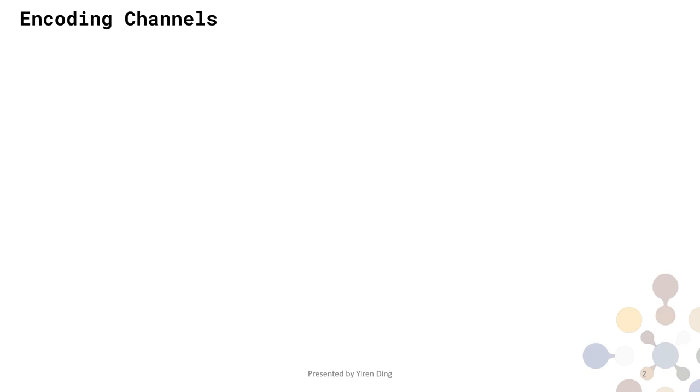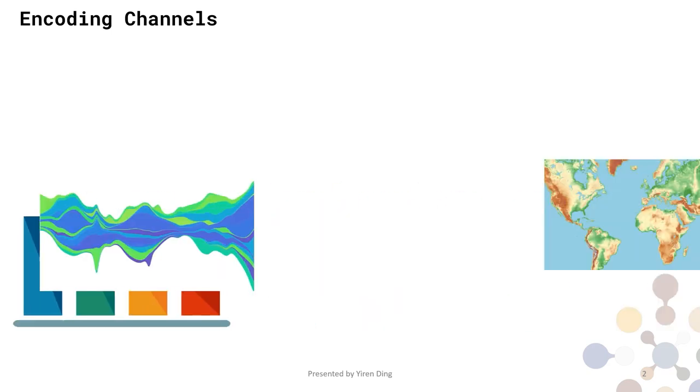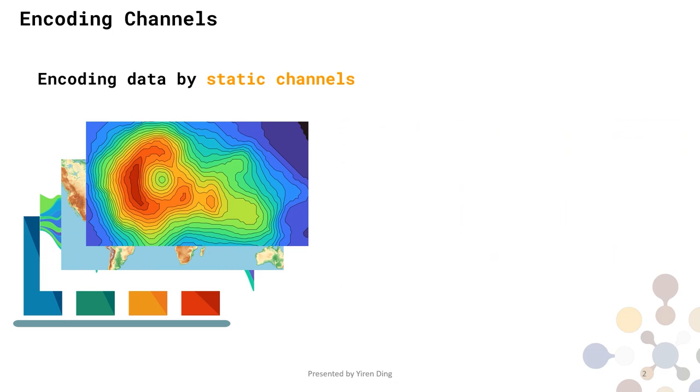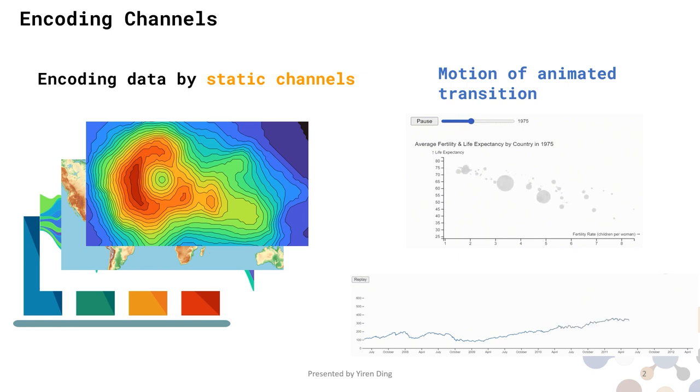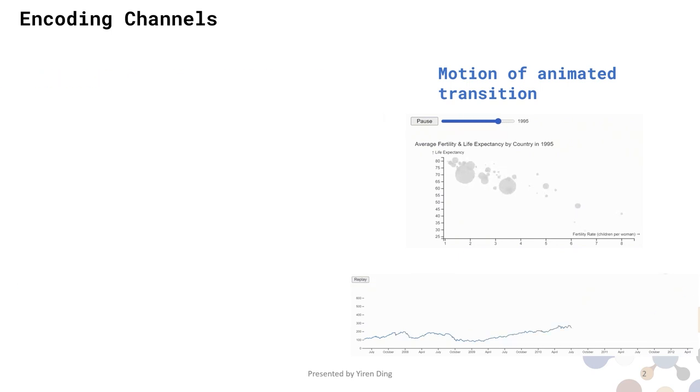Data visualizations usually leverage channels to encode data values, such as color, position, and length. They are all static channels. Meanwhile, the application of motion is very limited. People use motion to make animated transitions from one visualization state to another, so these animations do not encode any data values.